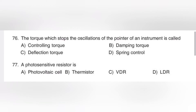A thermistor is a temperature sensor. Its resistance varies with temperature — it is a temperature sensitive resistor. A photosensitive resistor is an LDR — Light Dependent Resistor. That is, a photosensitive resistor is an LDR. A photovoltaic cell is a solar cell that converts light energy to electrical energy.